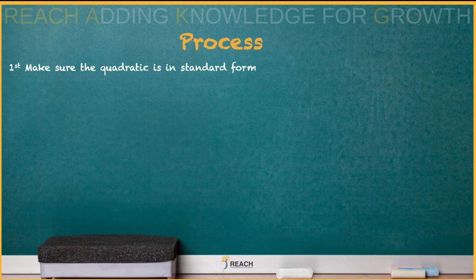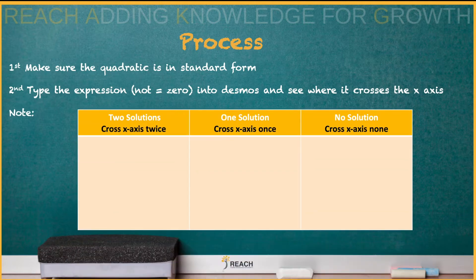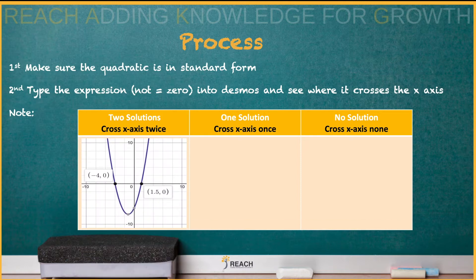So what's the process? Make sure it's in standard form: ax² + bx + c = 0. You're going to type in the expression — not the equals zero part — into Desmos, and see where it crosses the x-axis. We're going to have two solutions, one solution, or no solution. Look at this example of two solutions — it's going to cross at those two spots.